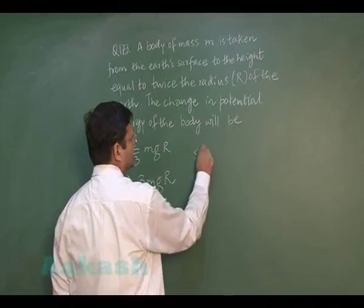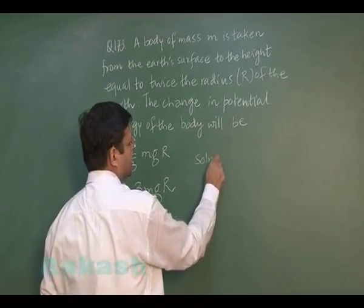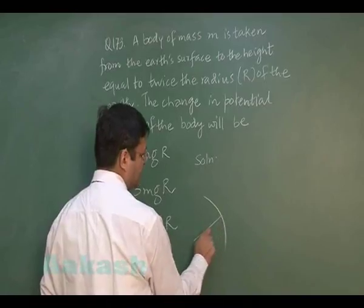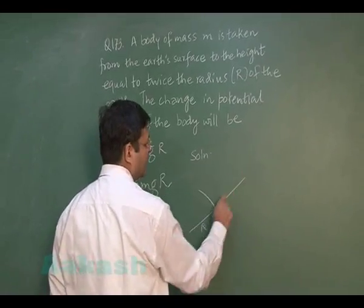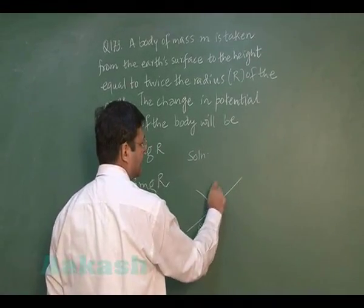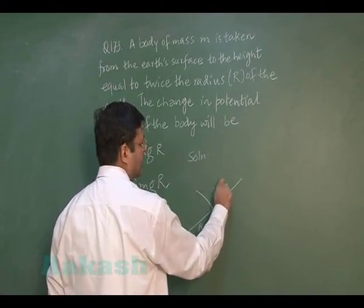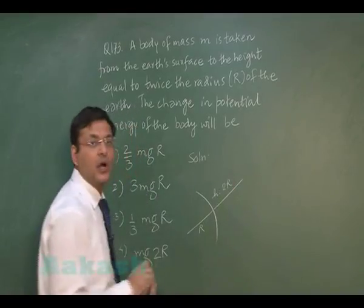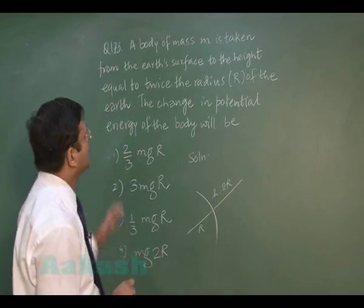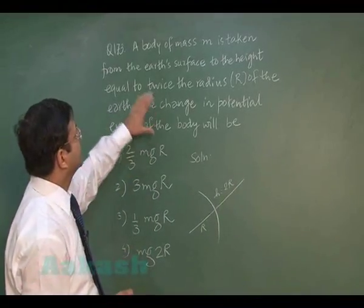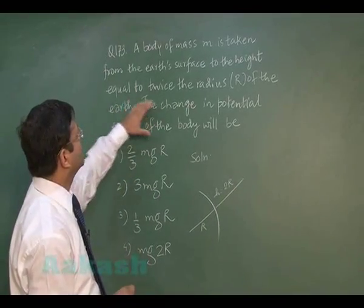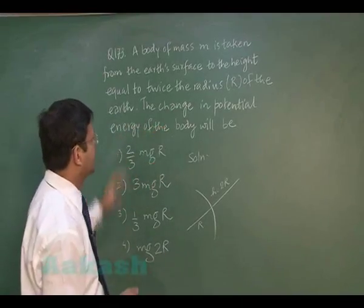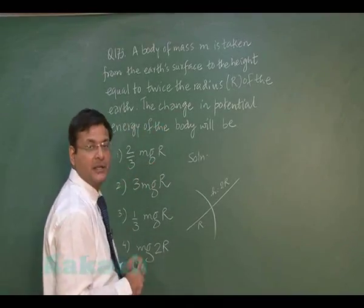For the solution, the radius is R and from here the body is being lifted up to a height of 2R. The change in potential energy has been demanded for height equal to twice the radius R of the earth.